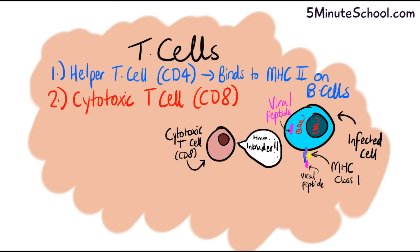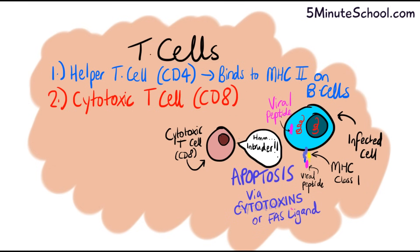The cytotoxic CD8 cells have T cell receptors that recognize when a peptide on the surface of a cell is not normal, so they bind onto it. When binding occurs, the T cell either secretes cytotoxins like perforin or granulysin, which initiates programmed cell death called apoptosis, or the T cell expresses FAS ligand, which binds onto the FAS molecule on the infected cell, forming the death-inducing signaling complex and ultimately causing apoptosis.